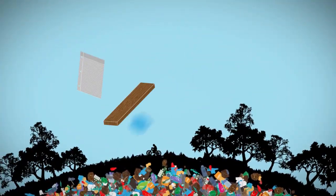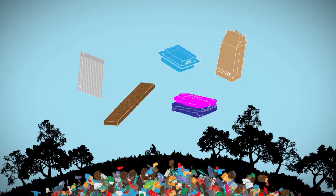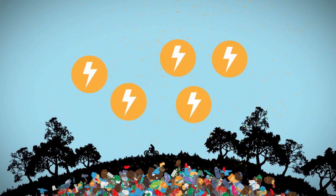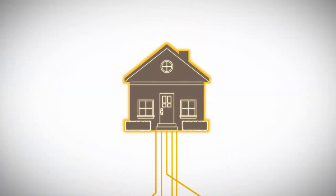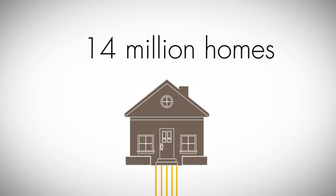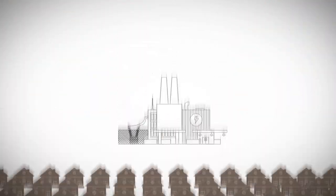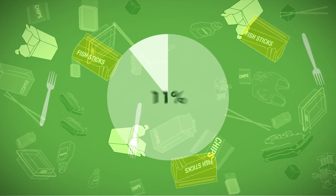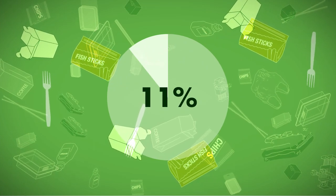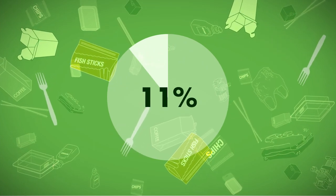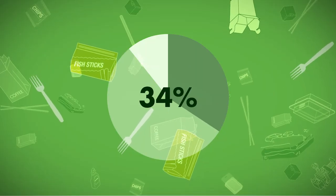If we took all of the paper, wood, plastics, old clothes, and other garbage that now goes to landfills and converted that to usable energy, we could power nearly 14 million homes every year. That's right, nearly 14 million homes. Today, only about 11% of all our municipal solid waste goes to waste-to-energy facilities. Another 34% gets recycled or composted. The rest still ends up buried in landfills.